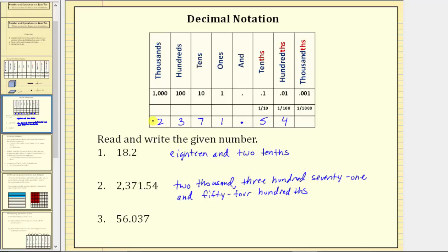For number three, the five is in the tens place value, the six is in the ones place value. We have a decimal point, a zero in the tenths place value, a three in the hundredths place value, and a seven in the thousandths place value. We read and write this number as "56 and 37 thousandths." We begin by hyphenating 56, and 37 thousandths with the 37 hyphenated.